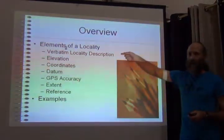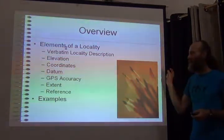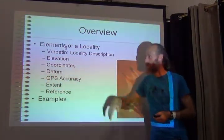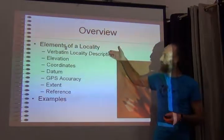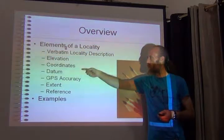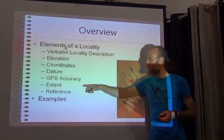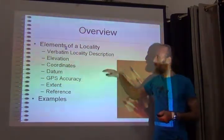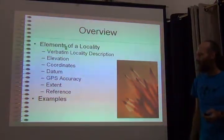What you had in the exercise was a verbatim locality description — just the text part, because I said you cannot use coordinates for the exercise. In the real world, you may have a combination of all of these things: a description, an elevation, and coordinates with datum — if you're lucky, even GPS accuracy, extent, and a reference like where did the information come from. Those are all possible elements of what you would have coming to you.